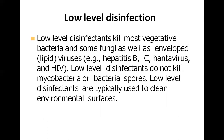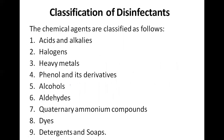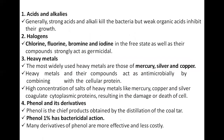The level of disinfectant used typically depends on the surface and the type of contamination present. Chemical agents are classified as acids and alkalis, halogens, heavy metals, phenols, alcohols, aldehydes, quaternary ammonium compounds, dyes, and detergents. Acids and alkalis kill bacteria; weak organic acids are included. Halogens include chlorine, bromine, and iodine.